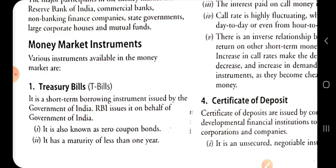The major participants of the money market — RBI, commercial banks, NBFC, state government and mutual funds — when they want to procure funds from the money market for a short term period, they will issue different kinds of instruments. The first money market instrument is the Treasury bill.